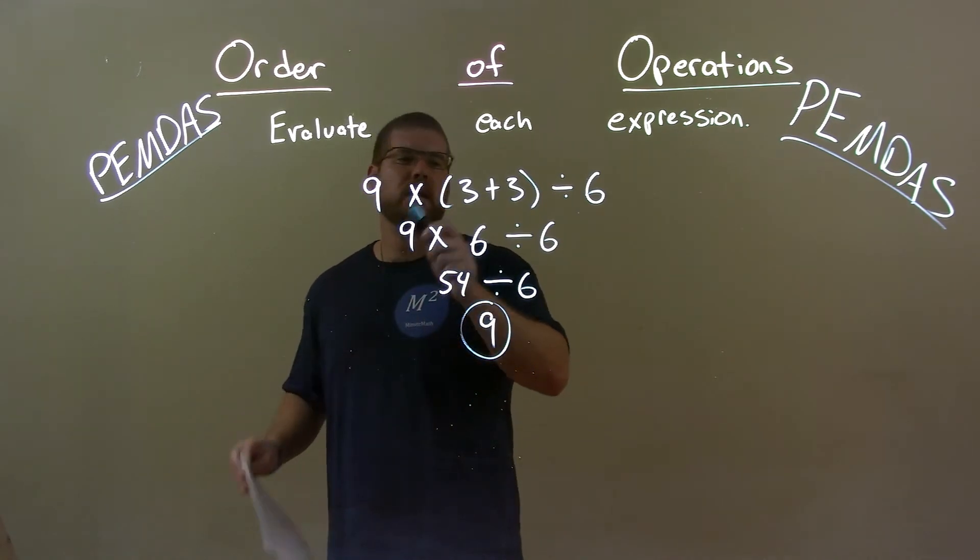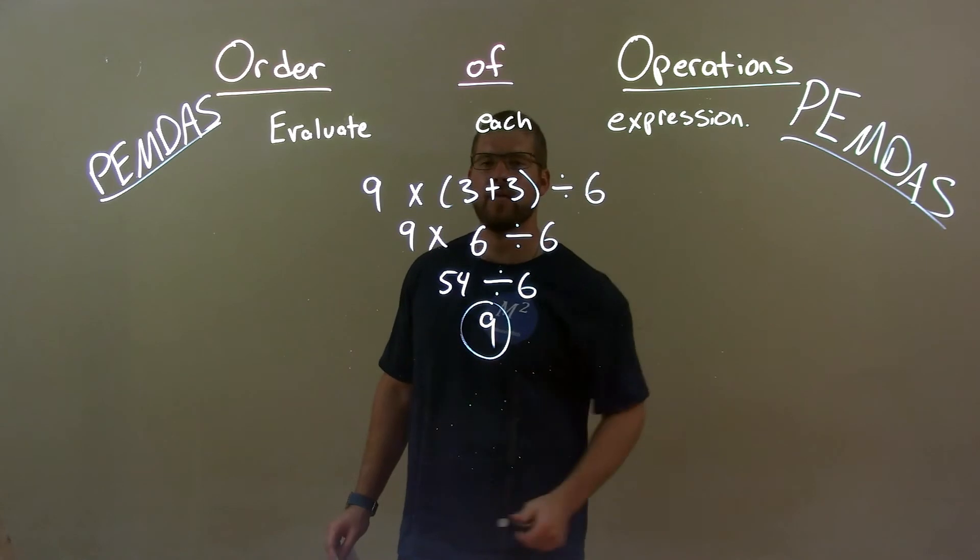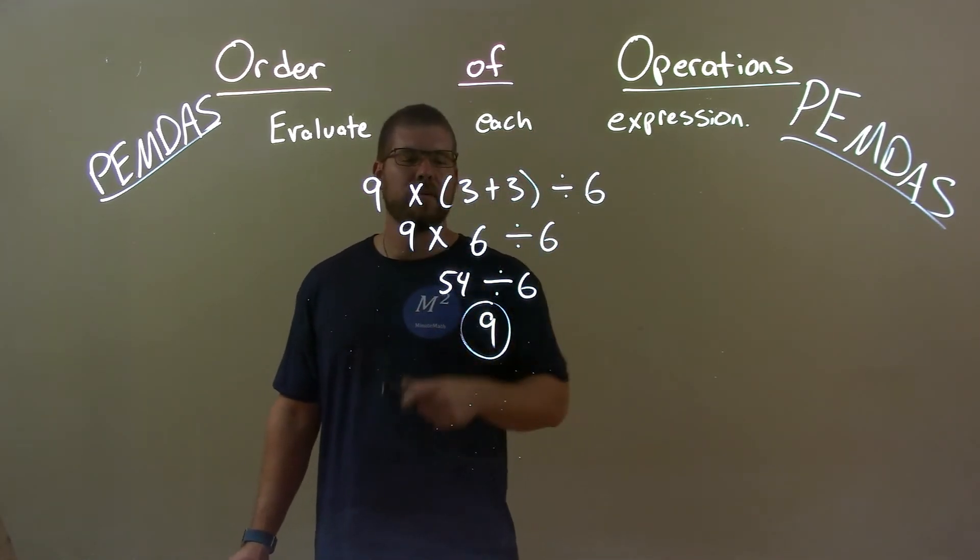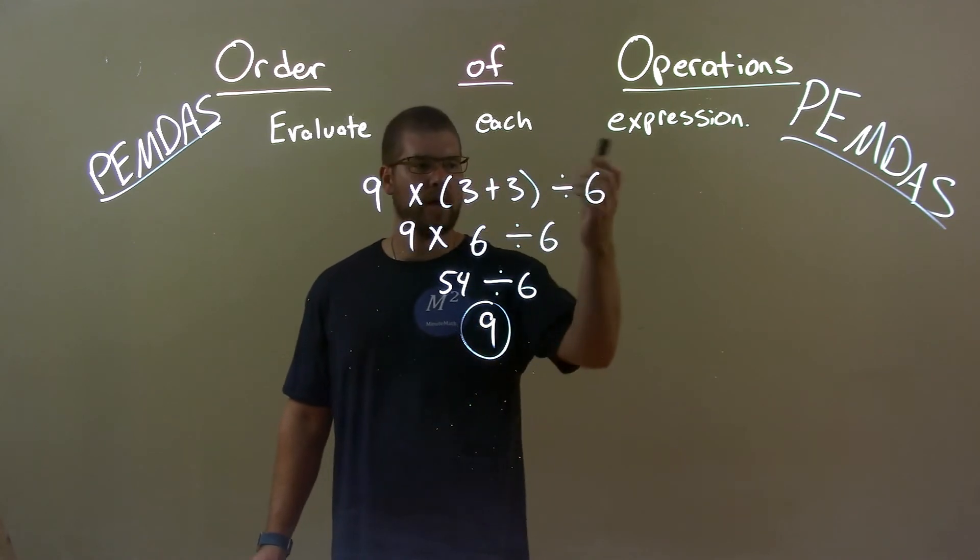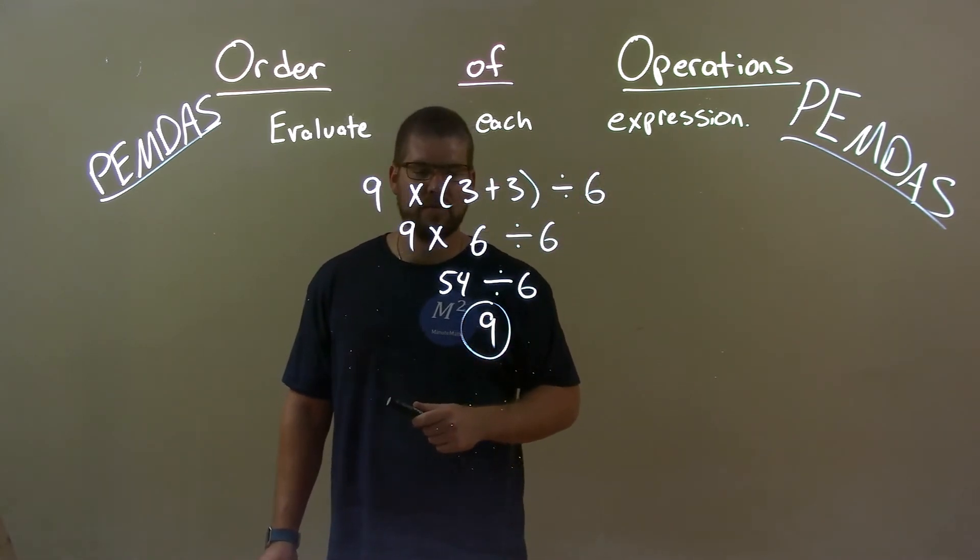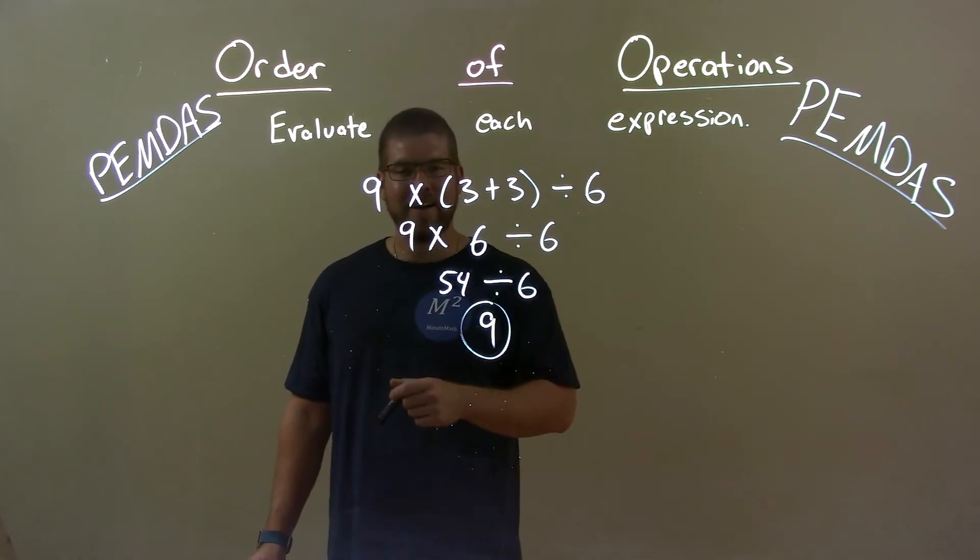Quick recap. We're given 9 times 3 plus 3 divided by 6. 3 plus 3 in parentheses, did that first. Brought that down, got a 6. 9 times 6 was next. 54 brought down the divided 6 the whole way. Now I have 54 divided by 6. 54 divided by 6 brings us back to 9. So again, 9 is our final answer.